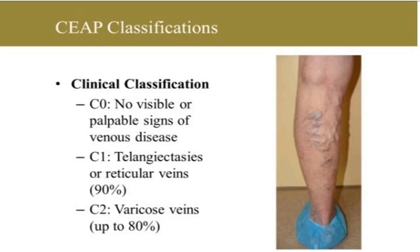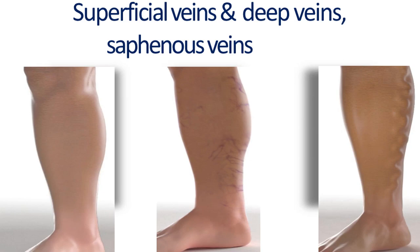From the clinical manifestation standpoint, we really only depend on two things. Either there is nothing to see or feel, or telangiectasia — those usually come for cosmetic reasons. Or a full-blown picture of varicose vein. Most cases come when they have the reticular vein. Most of the time they will go to their GP with leg pains. Telangiectasia is sometimes called spider web, and then the full-blown picture of varicose vein.